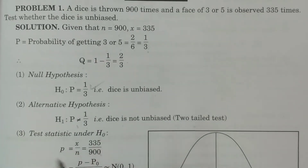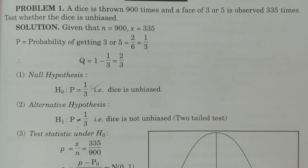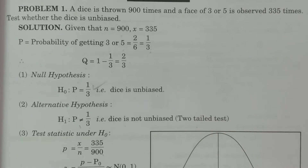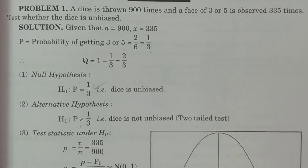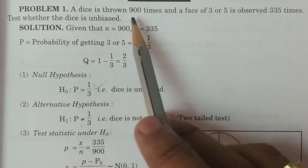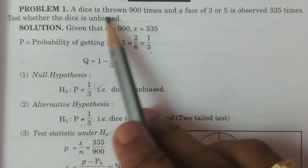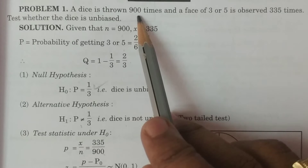First, we observe the problem: if we have a single sample or two samples, we decide how to proceed. We observe the problem and decide what test to use — proportion or means. Here, dice is thrown 900 times, so n is equal to 900. There is a single sample here.